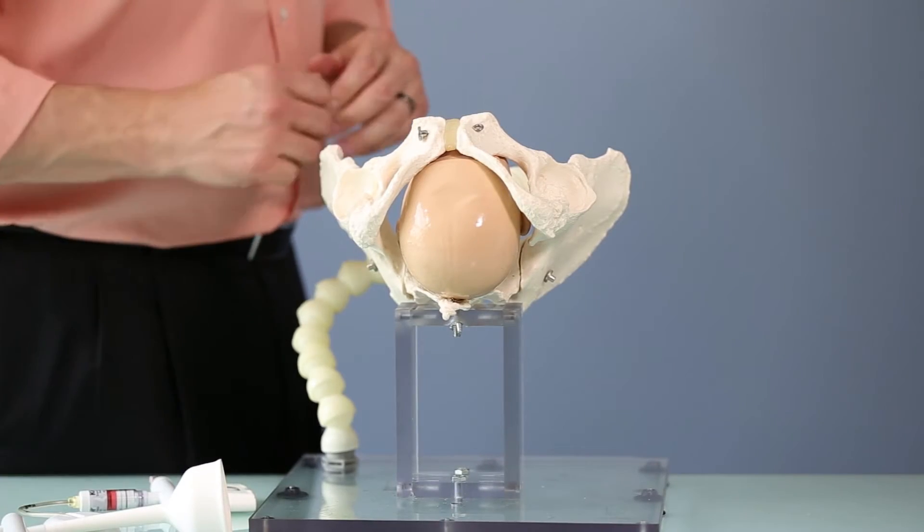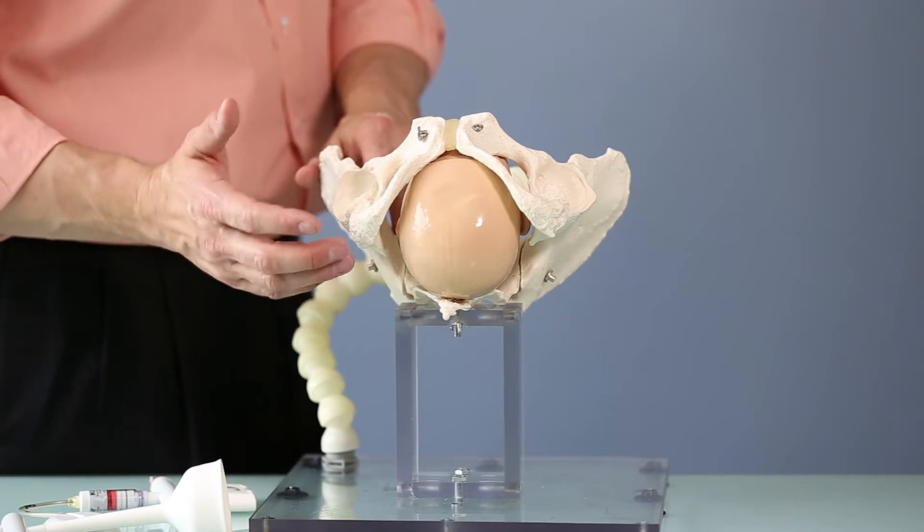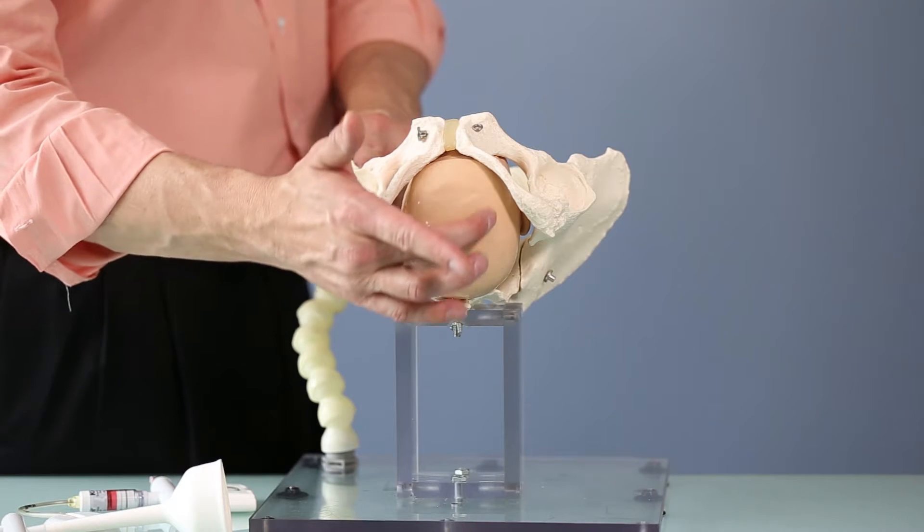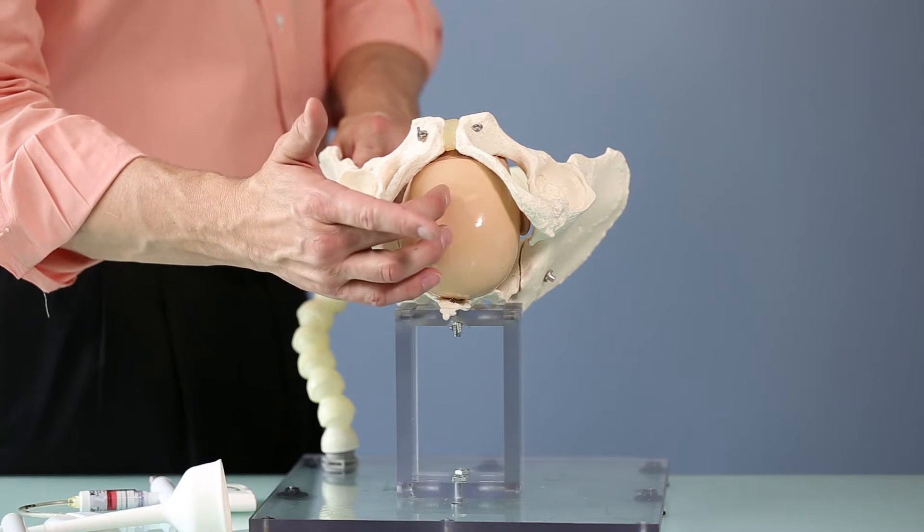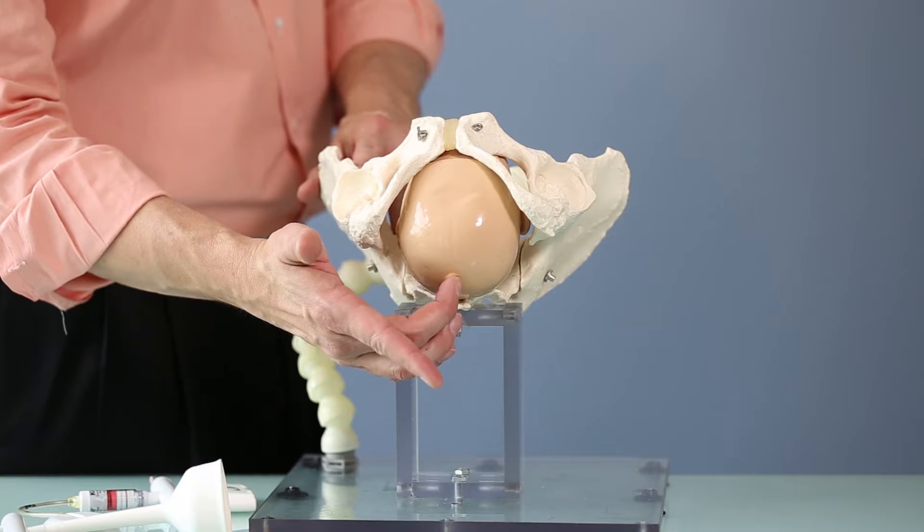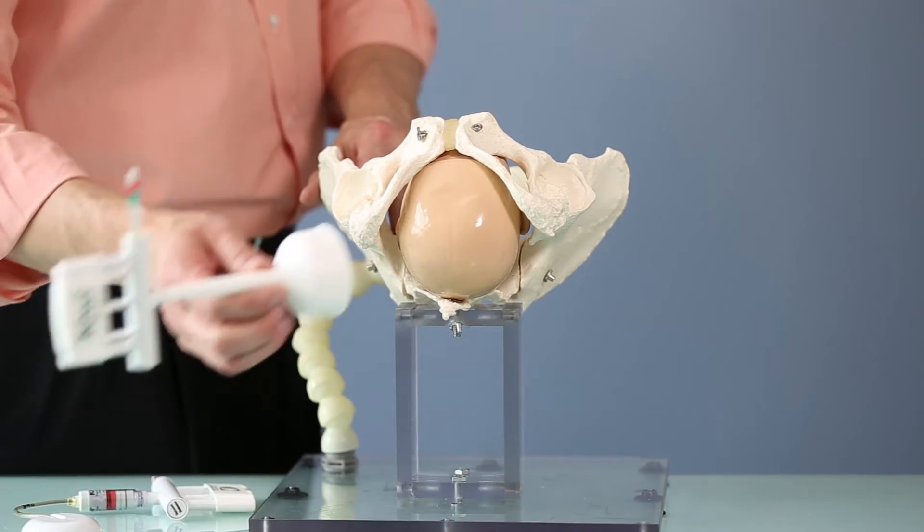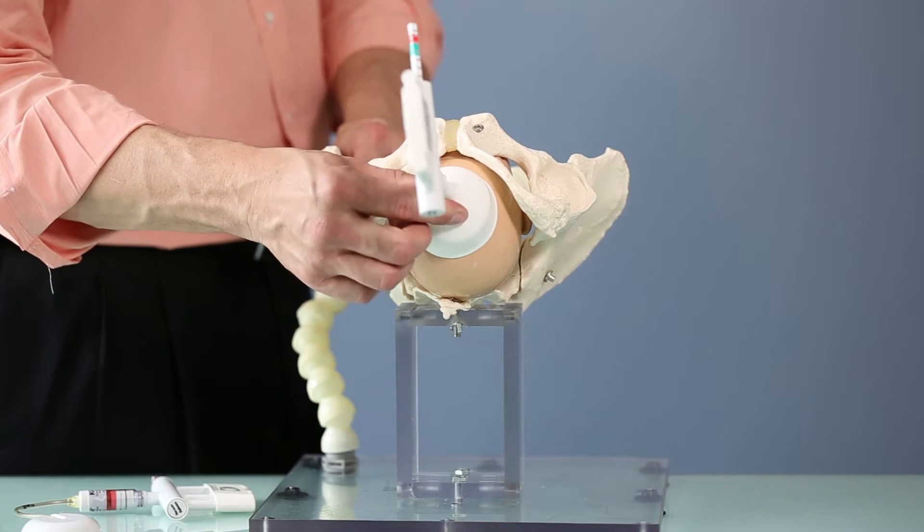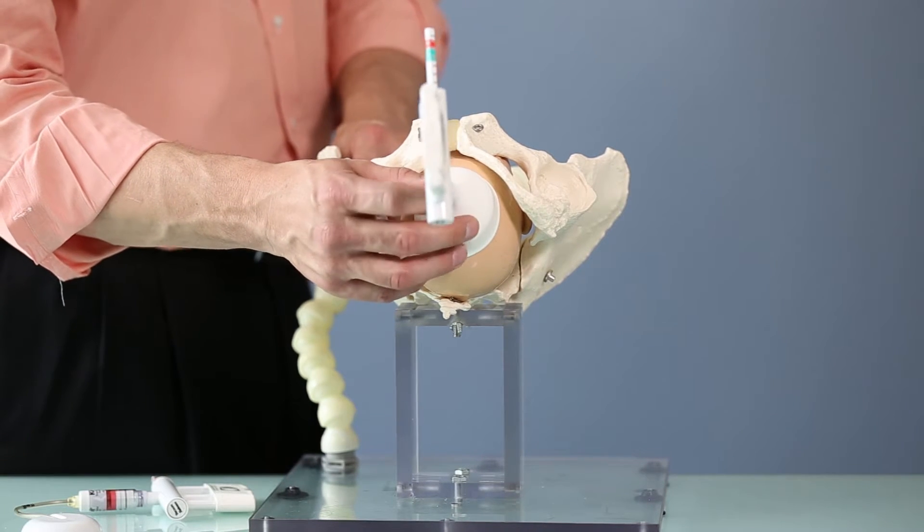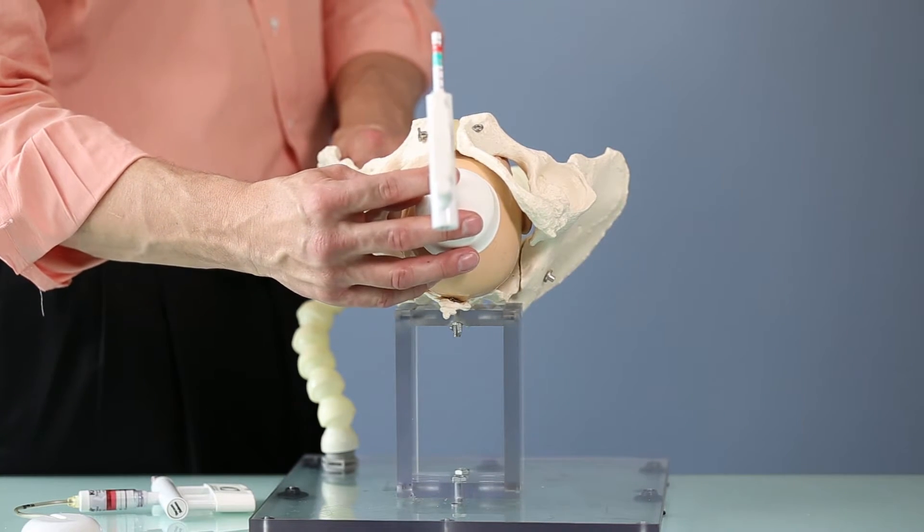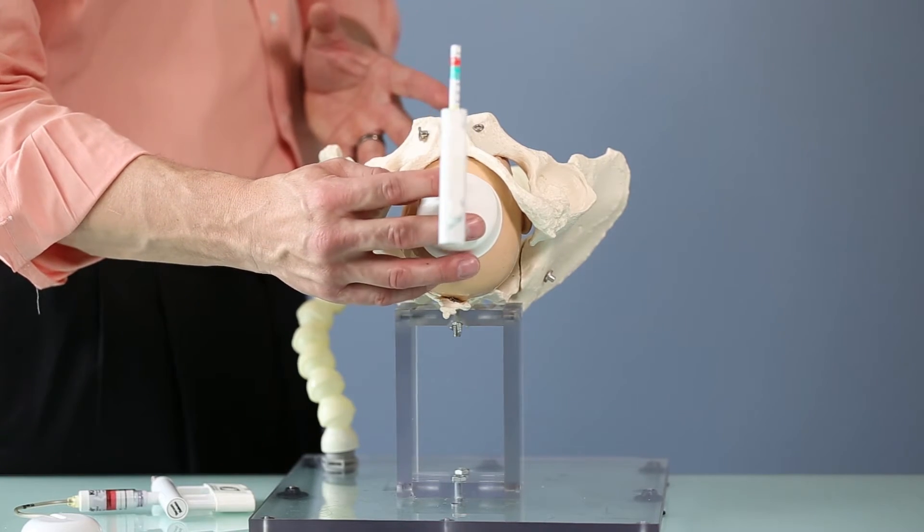So in the occiput posterior position, again, the presenting part becomes the anterior fontanelle. The posterior fontanelle is all the way back here and the flexion point is just three centimeters forward here. So by using a rigid stemmed cup, we're essentially forced to put it here, which is way too far forward over the anterior fontanelle, which does nothing to the problem of this baby.